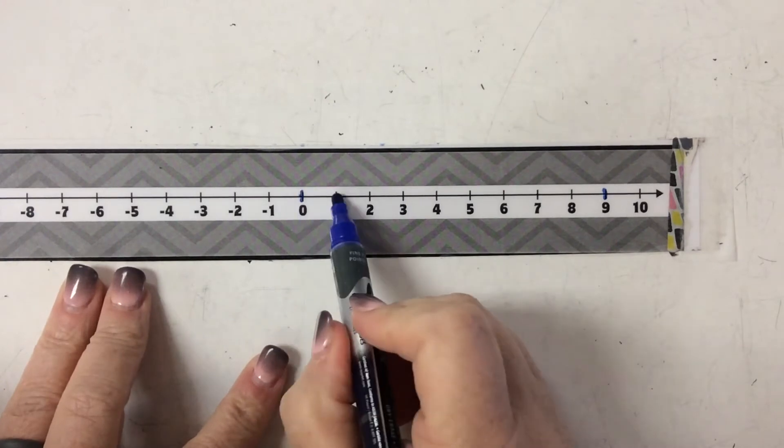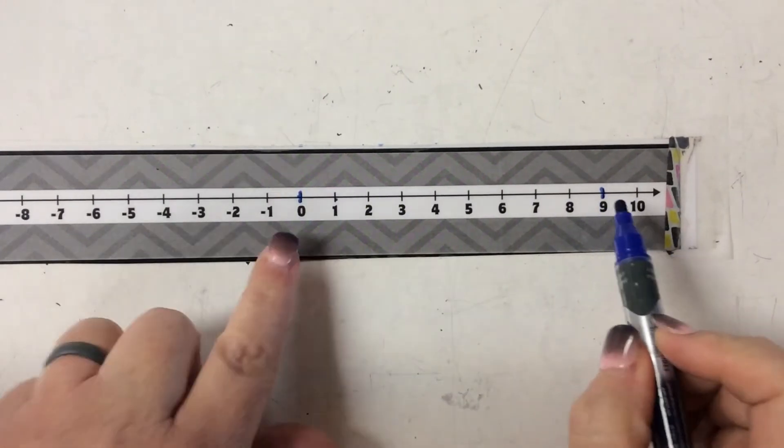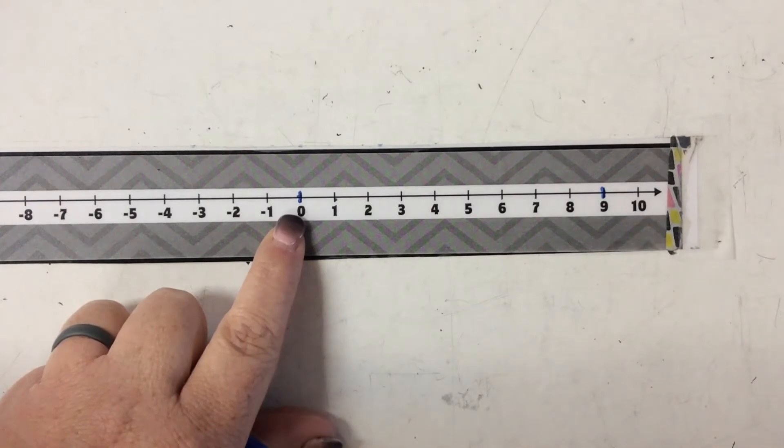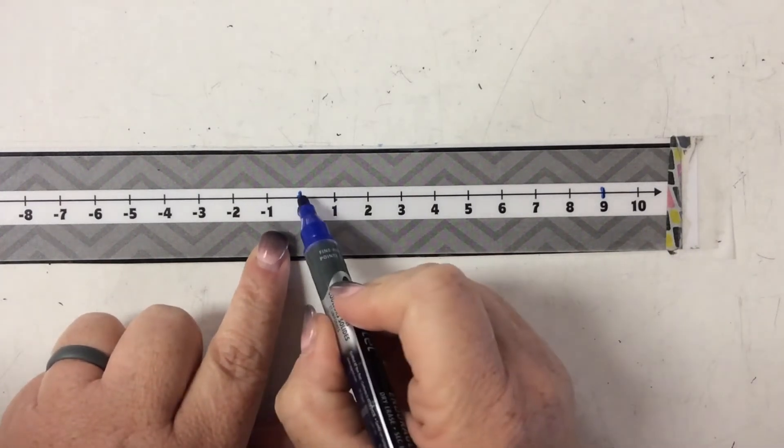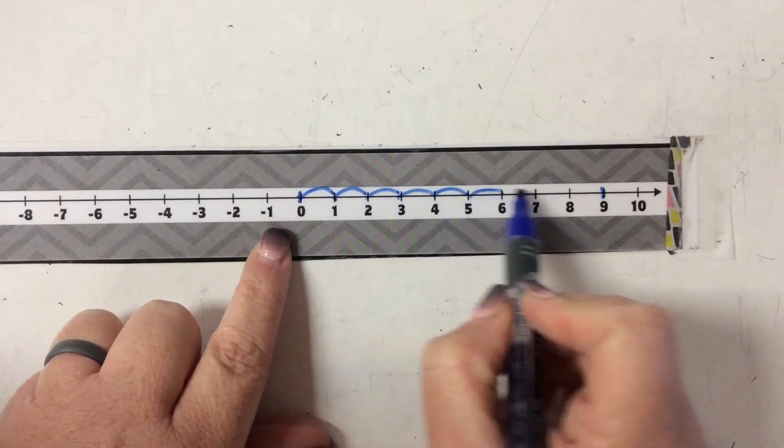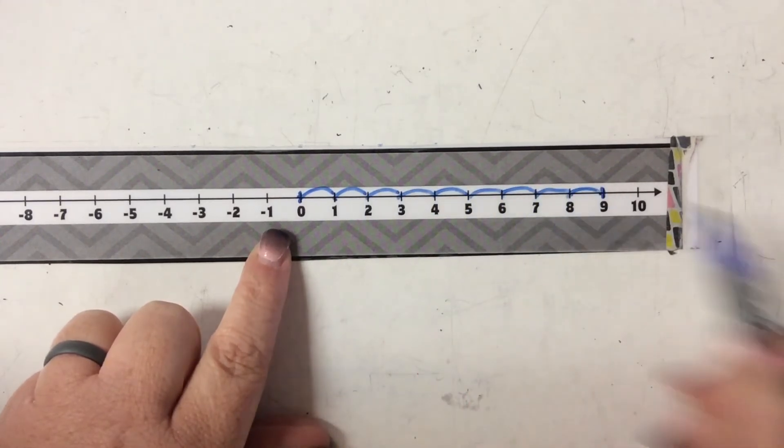I mean, don't count the lines because you'll end up with 10 lines if you're counting that line at 0 and all the way to the line at 9. It's important that you're counting the spaces, which is the jumps. So 1, 2, 3, 4, 5, 6, 7, 8, 9.